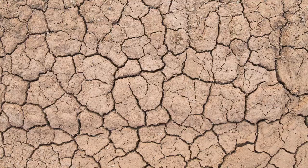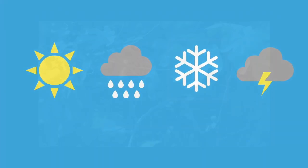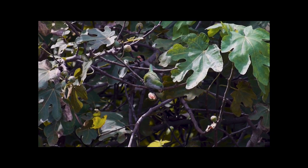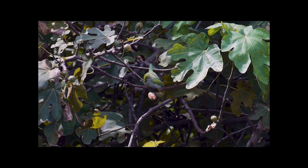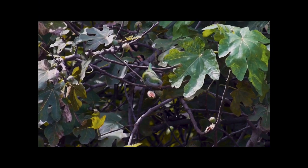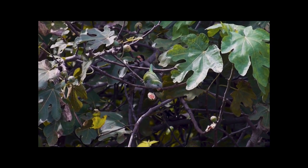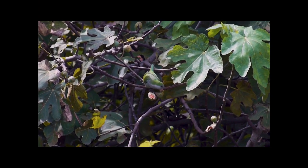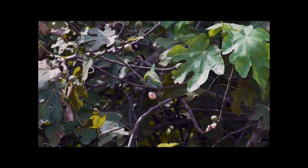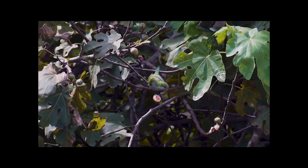The seed coat protects the embryo from drying out, from adverse weather such as snow, and from being digested. Many animals — birds and mammals — eat fruit as a food source, and when they eat the fruit they often swallow the seeds too. The seed coat prevents the seed from being digested by the stomach, meaning the seed just gets excreted out the other end. This is actually brilliant for the plant because the faeces is full of nutrients, and the animal will probably have gone far away from the mother plant, so the seeds get dispersed and planted in their own little package of fertiliser.